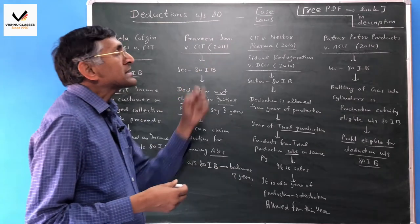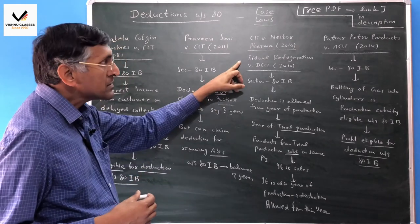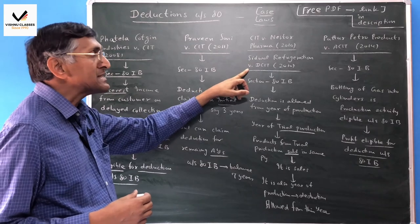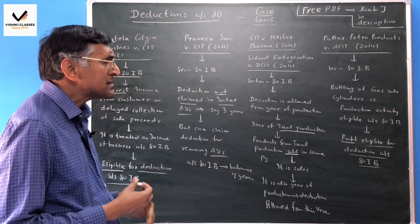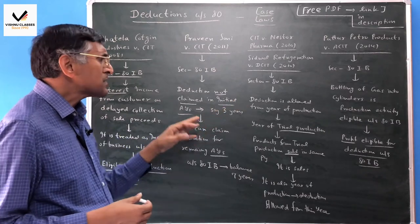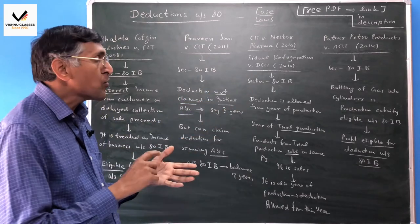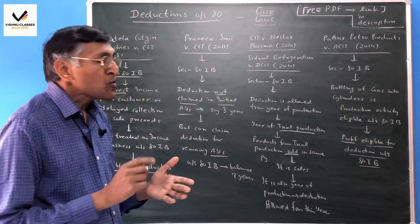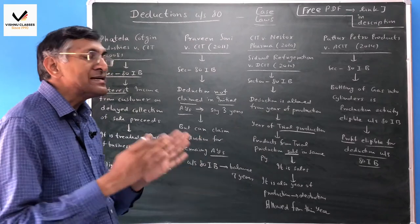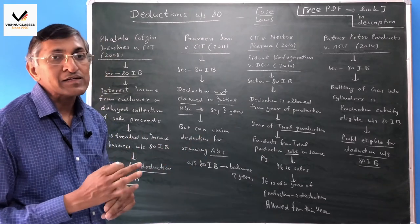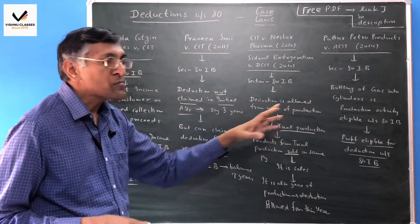This case law is CIT and CIGWAL Refrigeration versus DCIT. This is related to section 80IA. The question is, from which year is commercial production available? Commercial production means you can do sale.